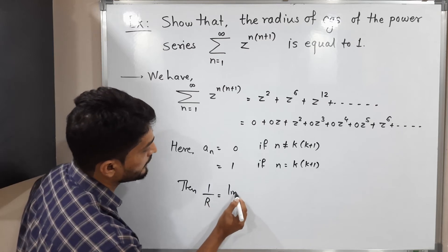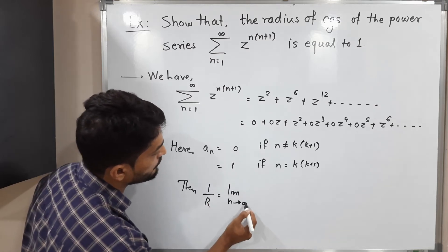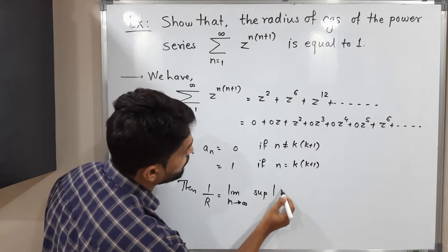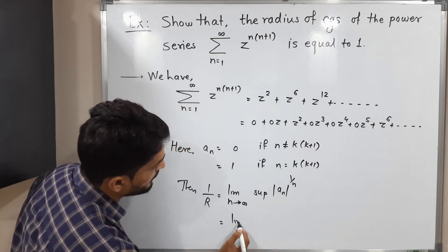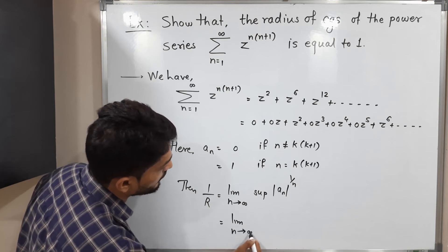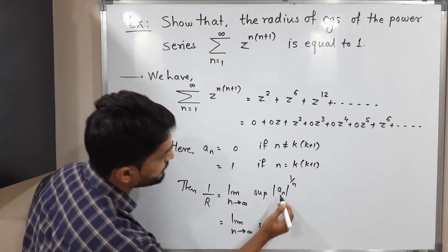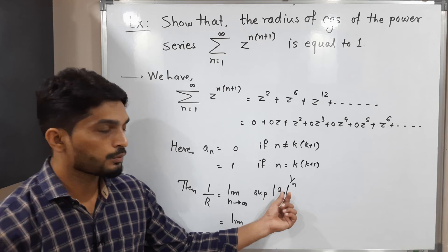R means radius of convergence is limit n tends to infinity supremum of |a_n| raised to 1/n. So this is equal to limit n tends to infinity supremum of, let us find |a_n| raised to 1/n.